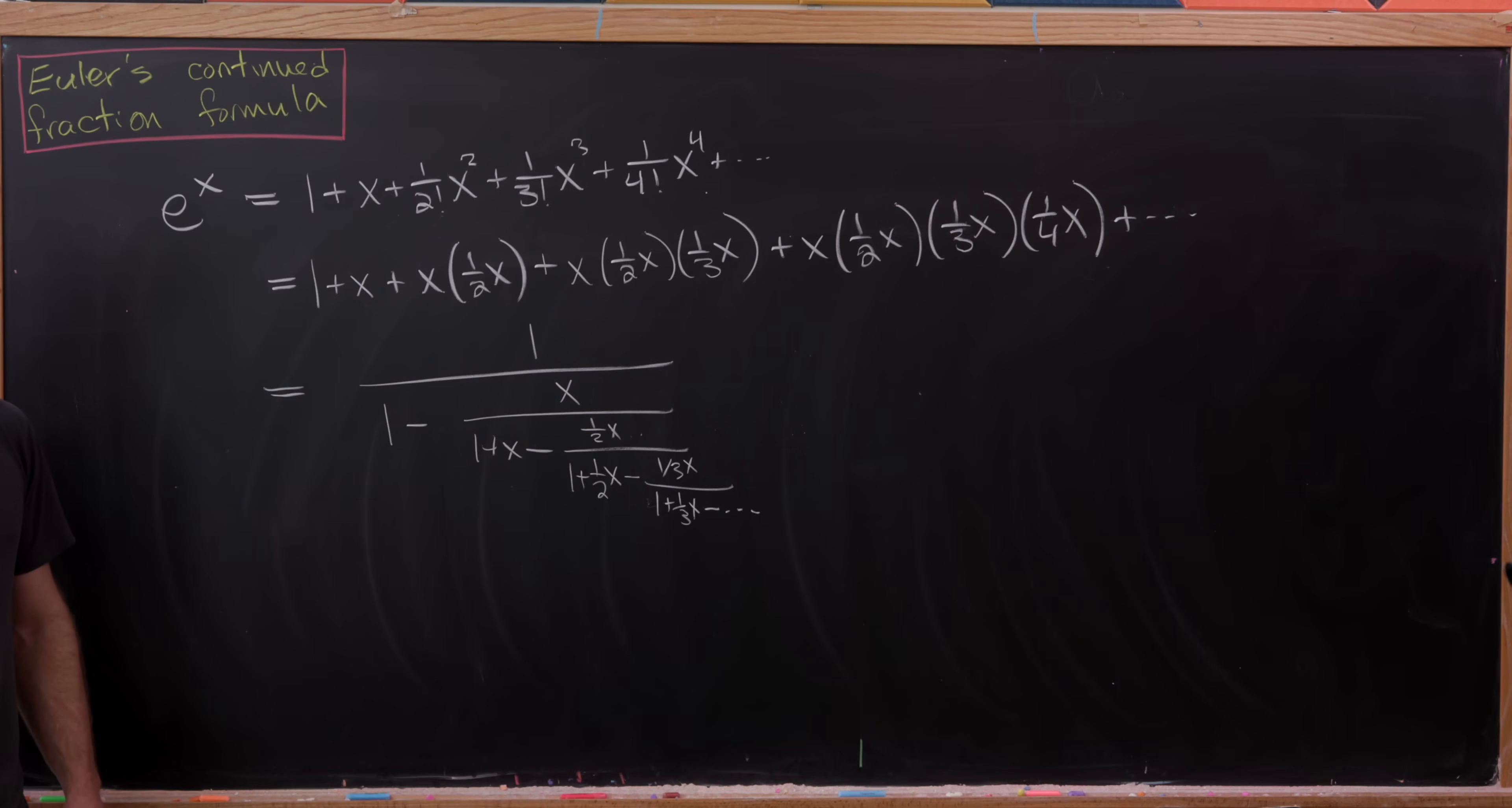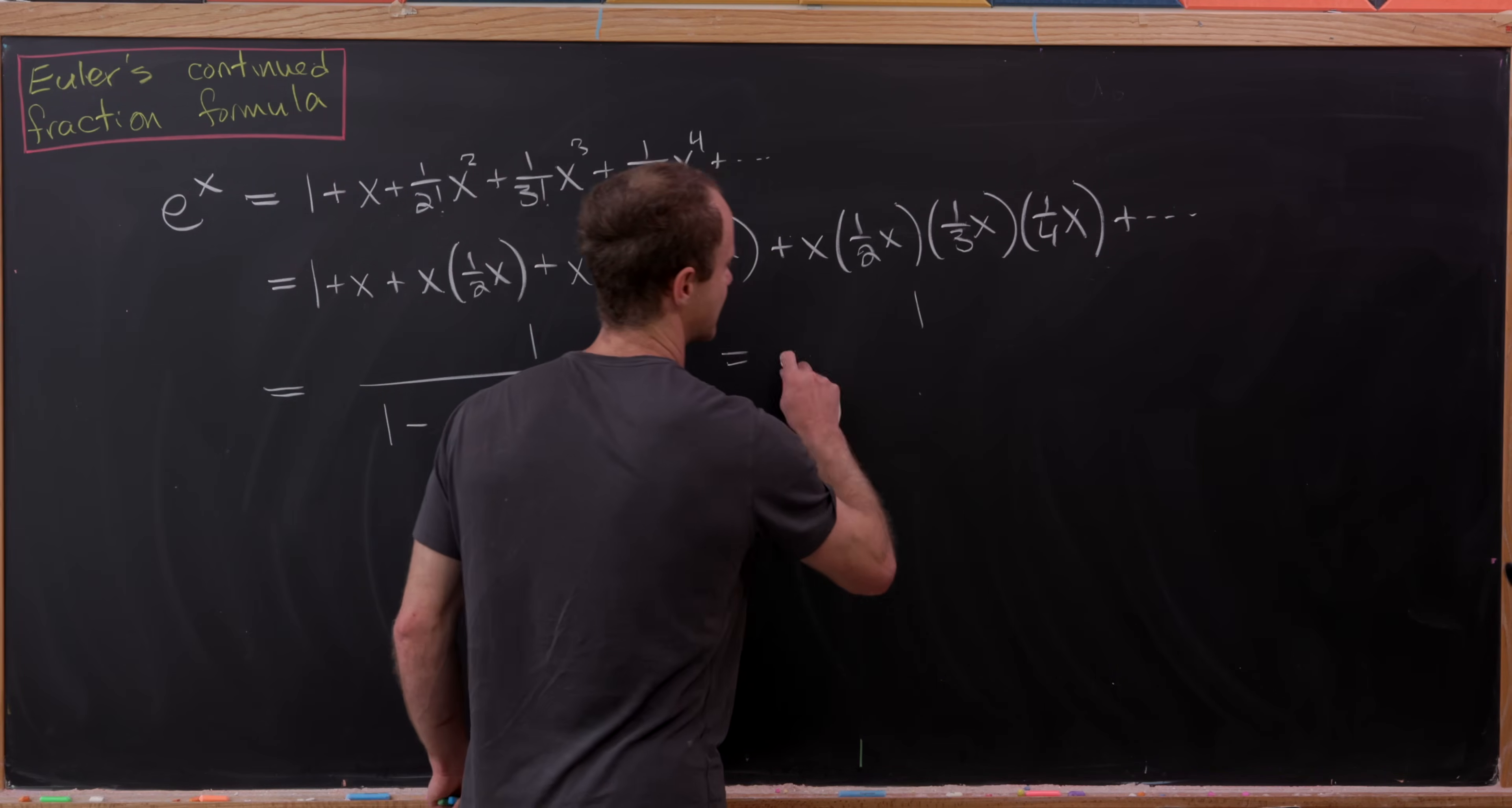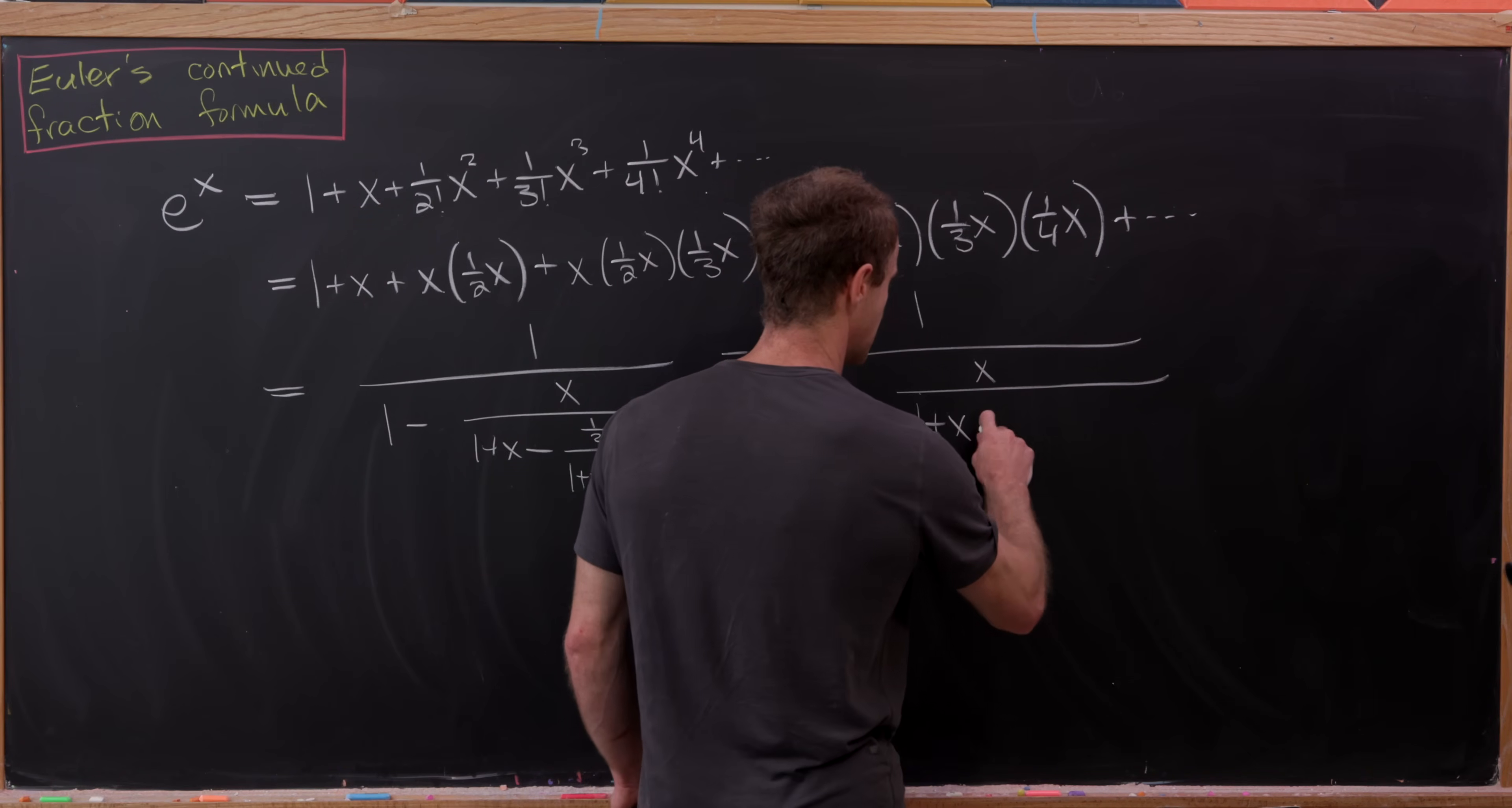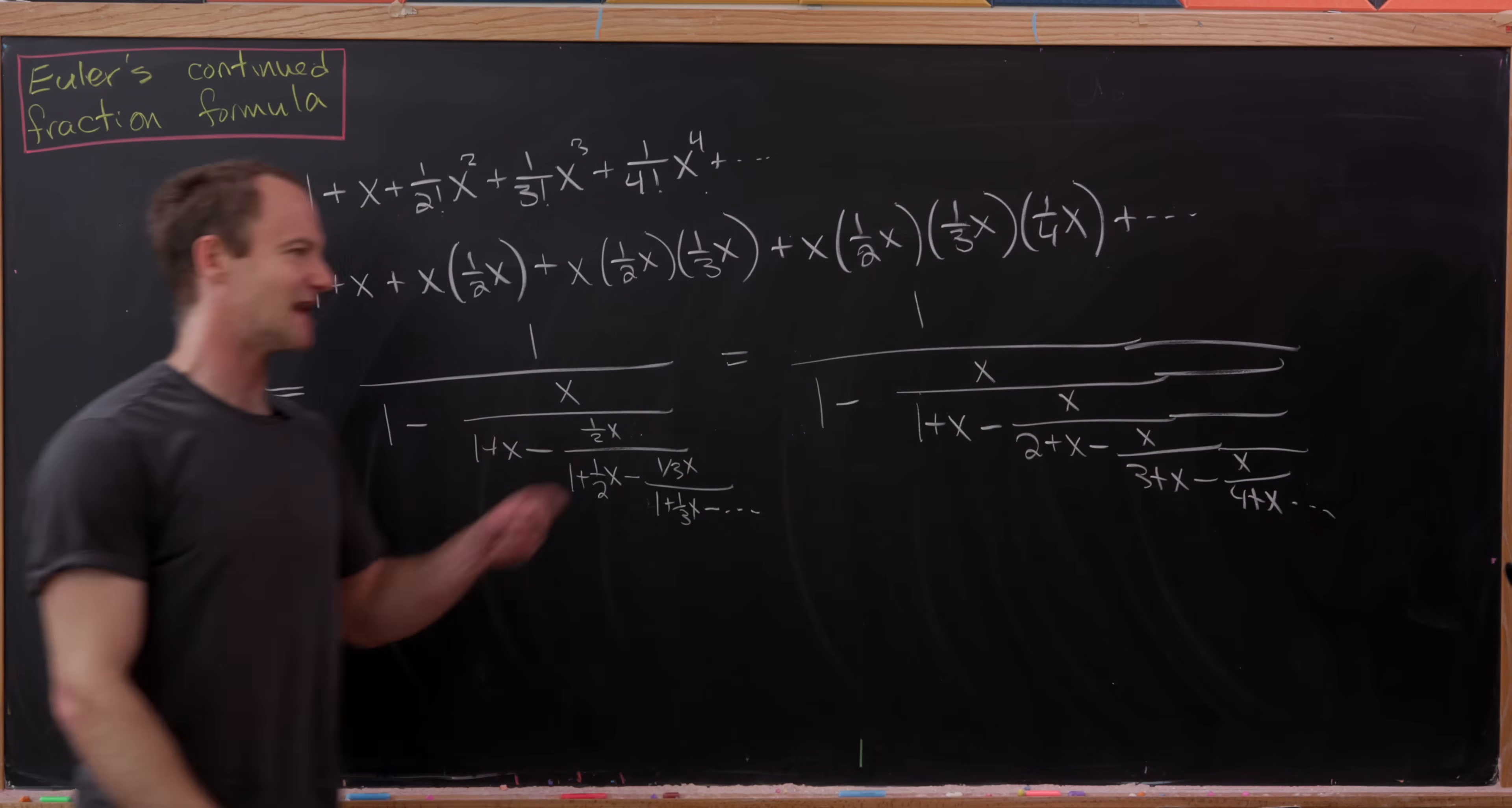But I think it might look nicer if we clear denominators along the way. And we can do that by, for instance, multiplying this fraction by 2 over 2, and then continue doing that all the way down. So that'll leave us with something like this. So we'll have 1 over, so it'll be 1 minus x over, and then 1 plus x minus x over, 2 plus x minus x over, 3 plus x minus x over, 4 plus x, and so on and so forth. So now we've got this nice pattern.